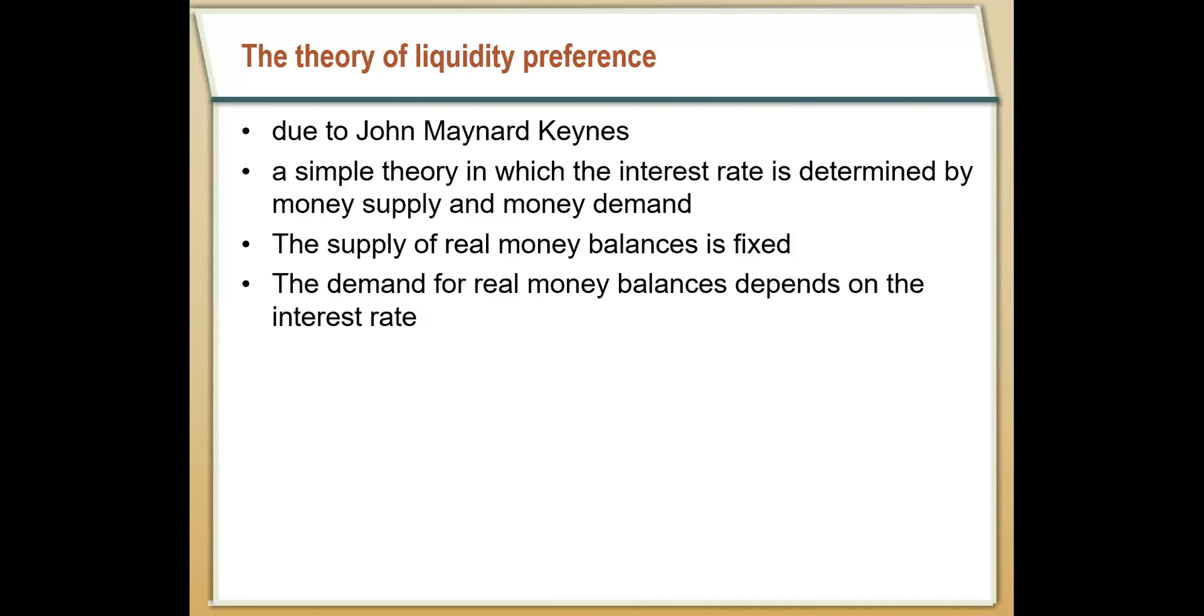To do that we're going to use this theory of liquidity preference in the LM curve. This entire theory comes from John Maynard Keynes and his writings right around the Great Depression, basically trying to describe ways that we can counteract these short-run fluctuations with different policies.